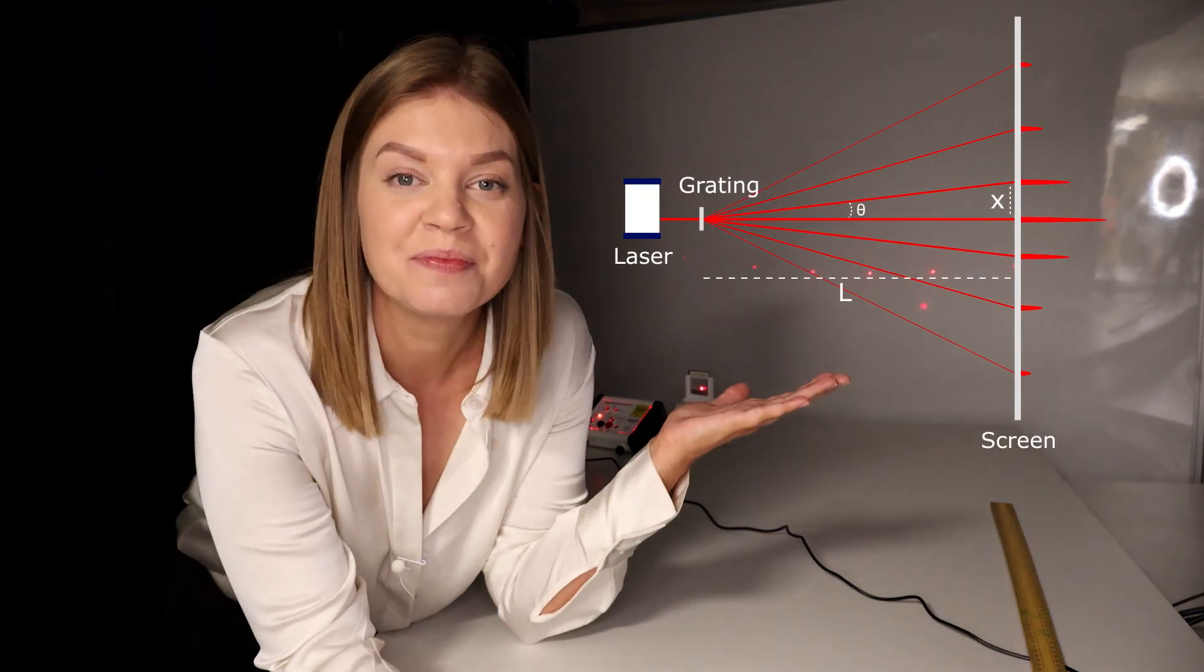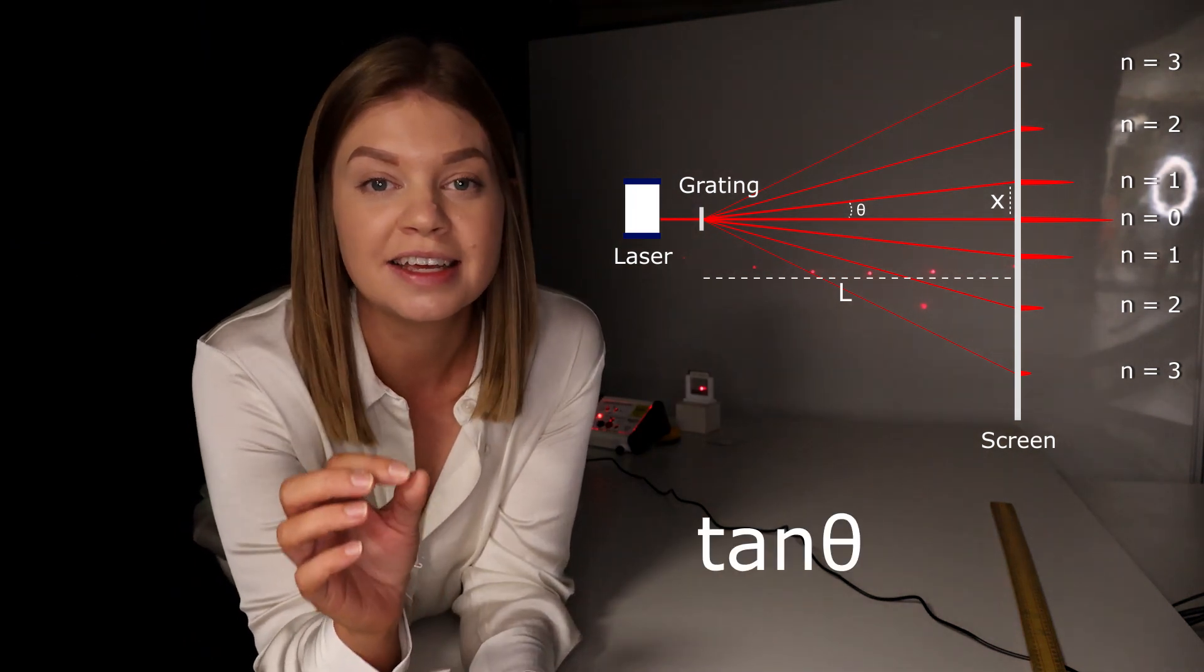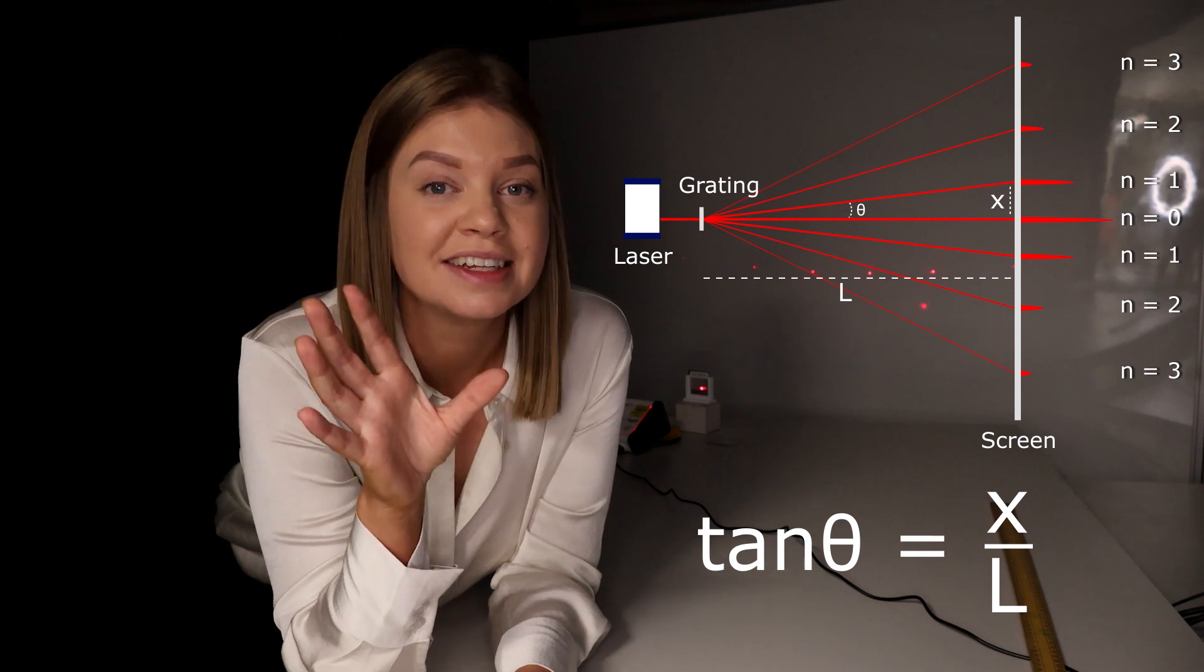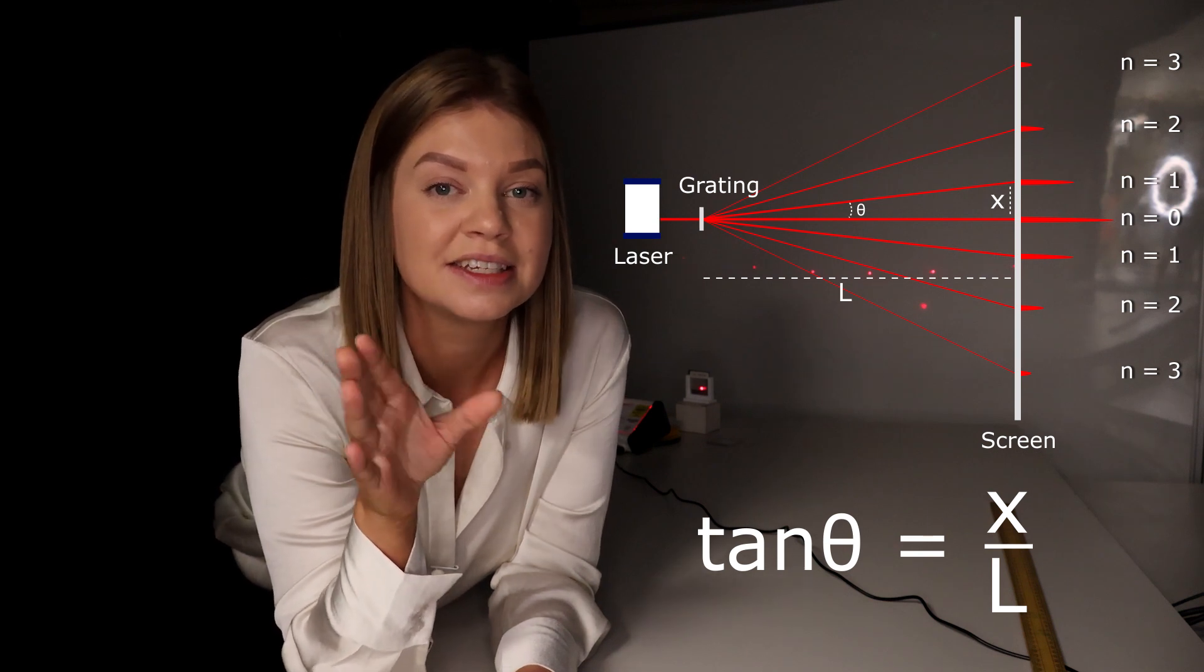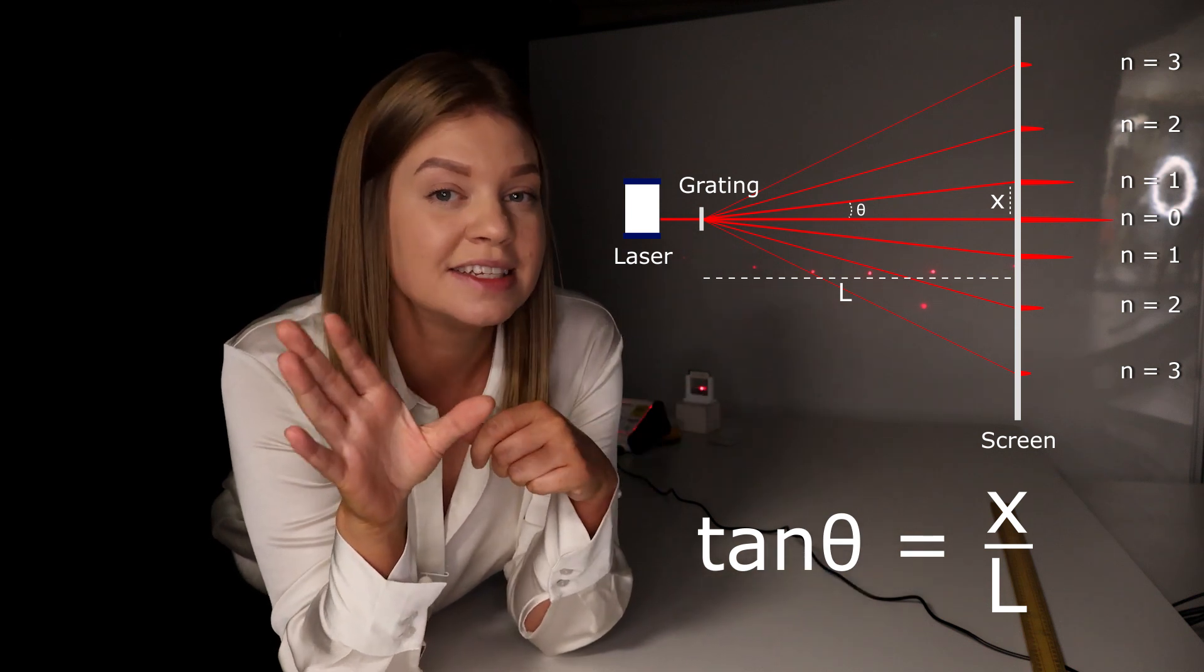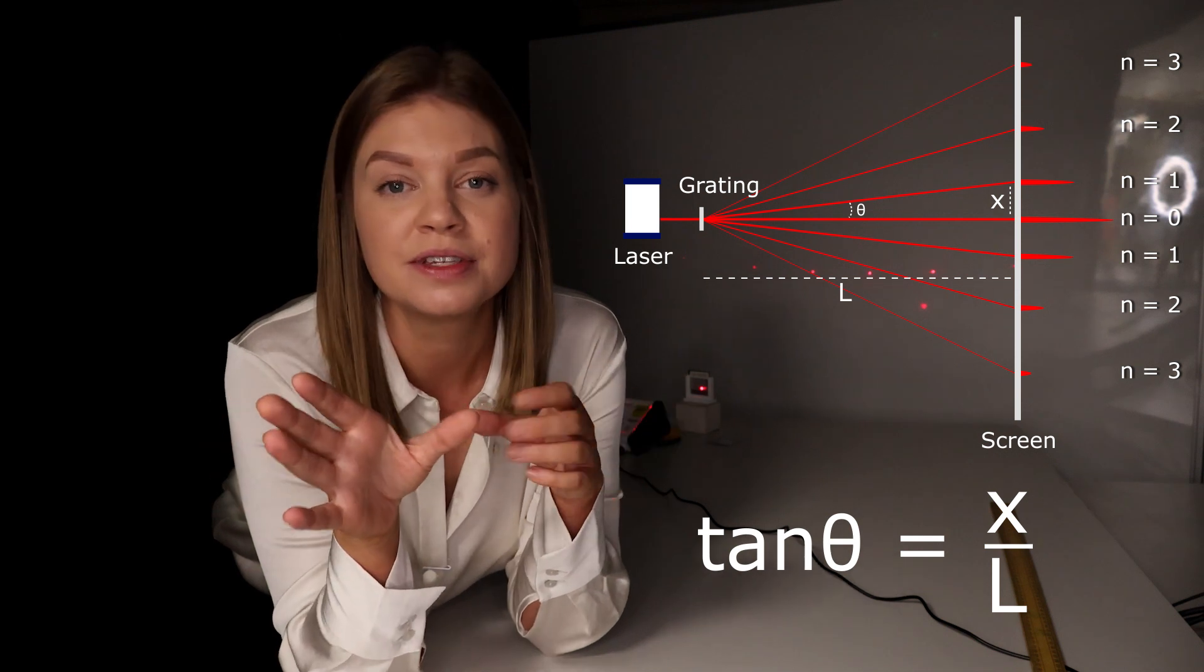So the geometry of these spots is shown in this diagram. Now if we apply trigonometry to this system, we can see that tan theta equals x over L. So the distances that we need to measure are x and L. So x is the distance from the central maximum to the nth order diffraction peak.